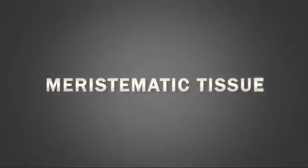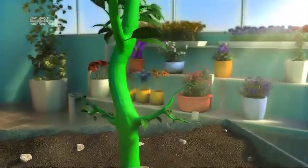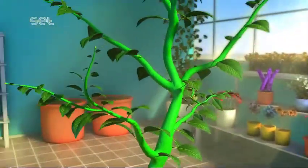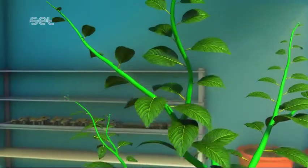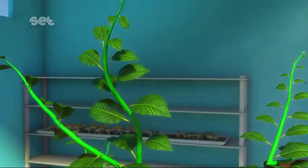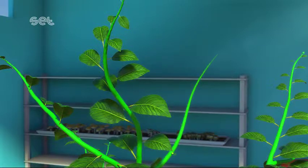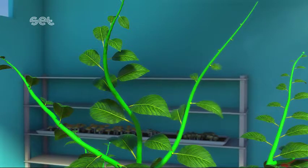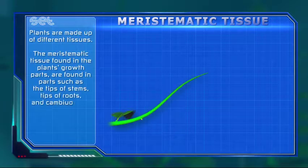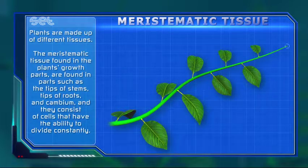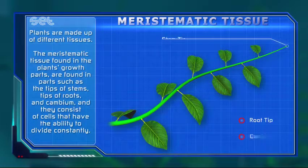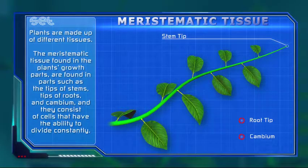Meristematic Tissue. Plants are made up of different tissues. The meristematic tissue found in the plant's growth parts are found in parts such as the tips of stems, tips of roots and cambium, and they consist of cells that have the ability to divide constantly.